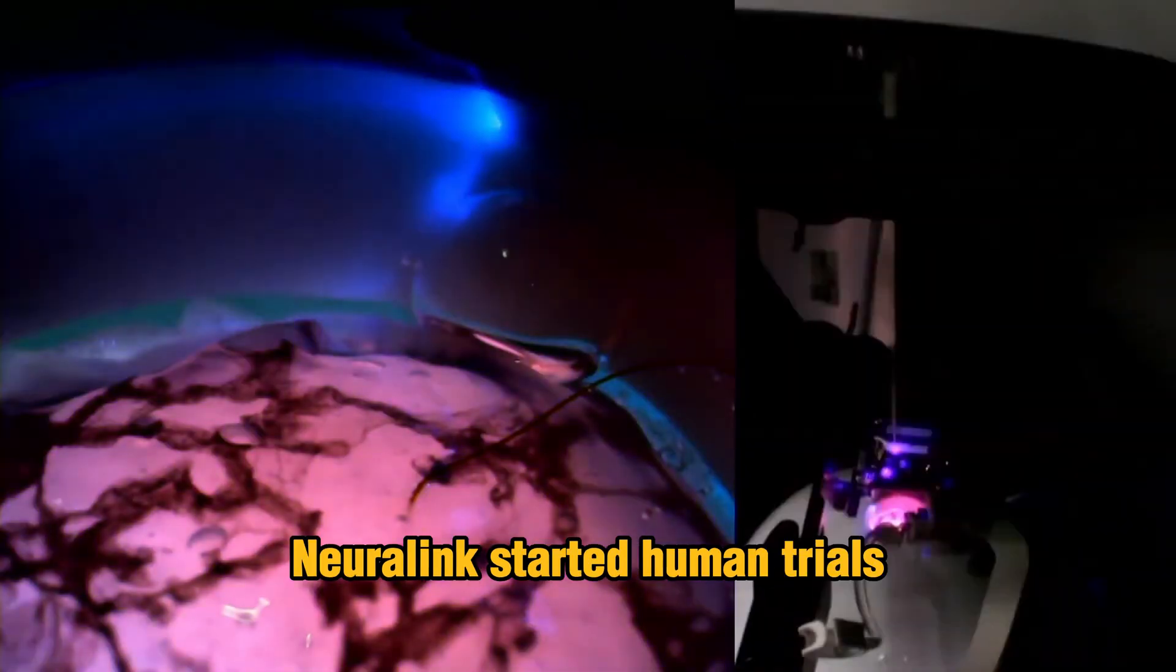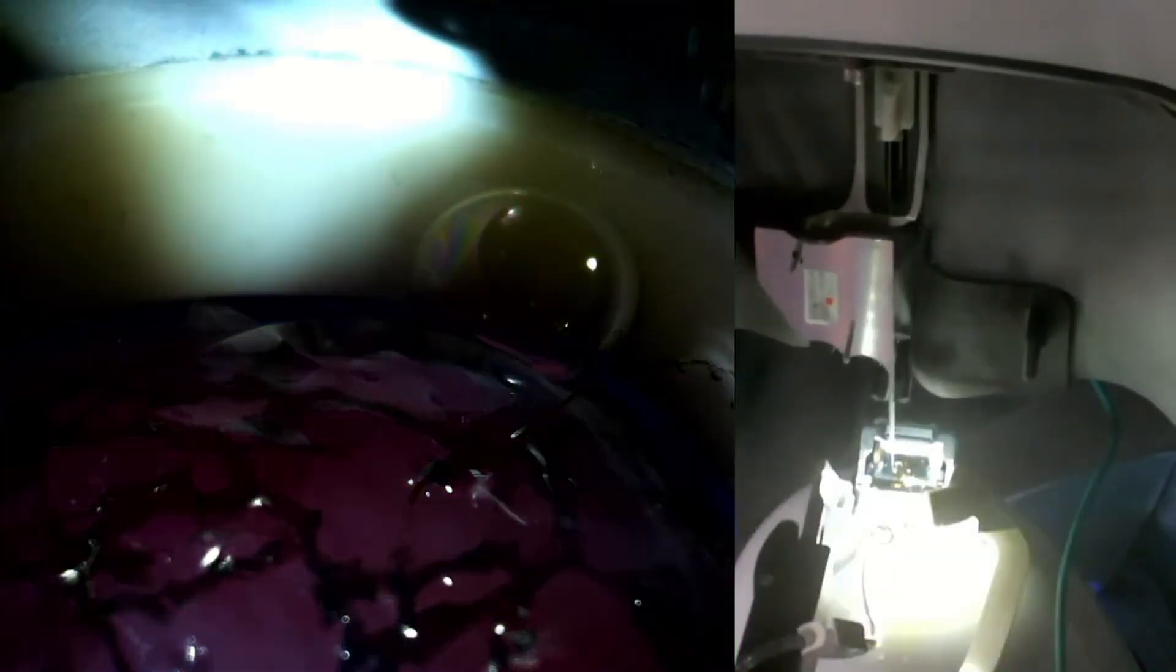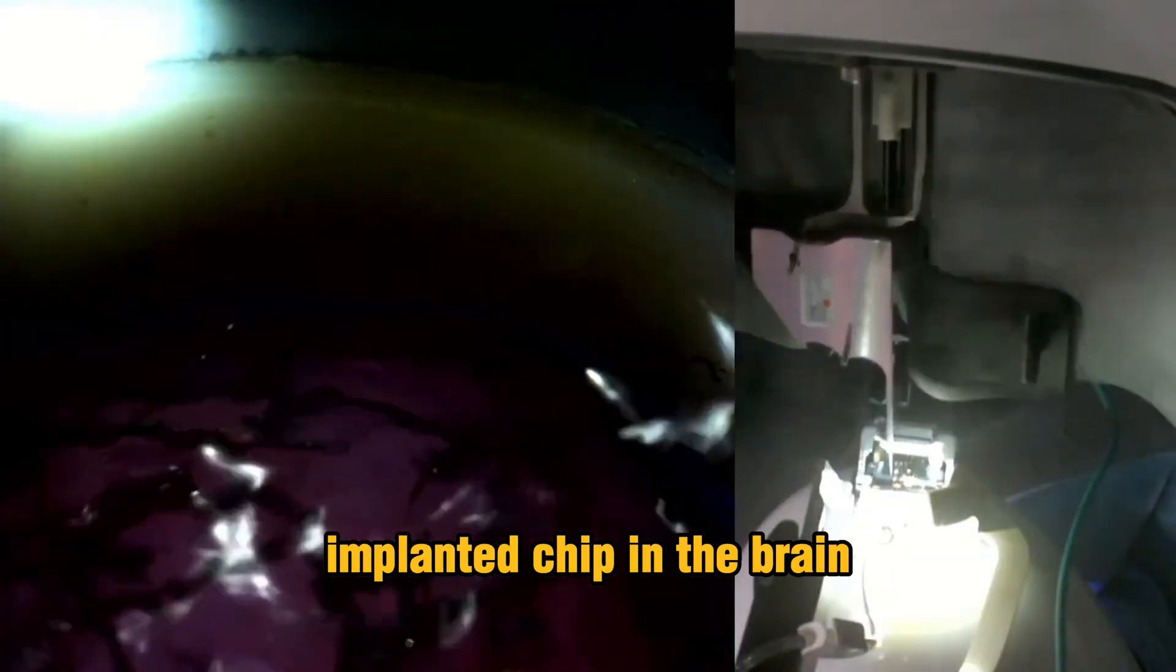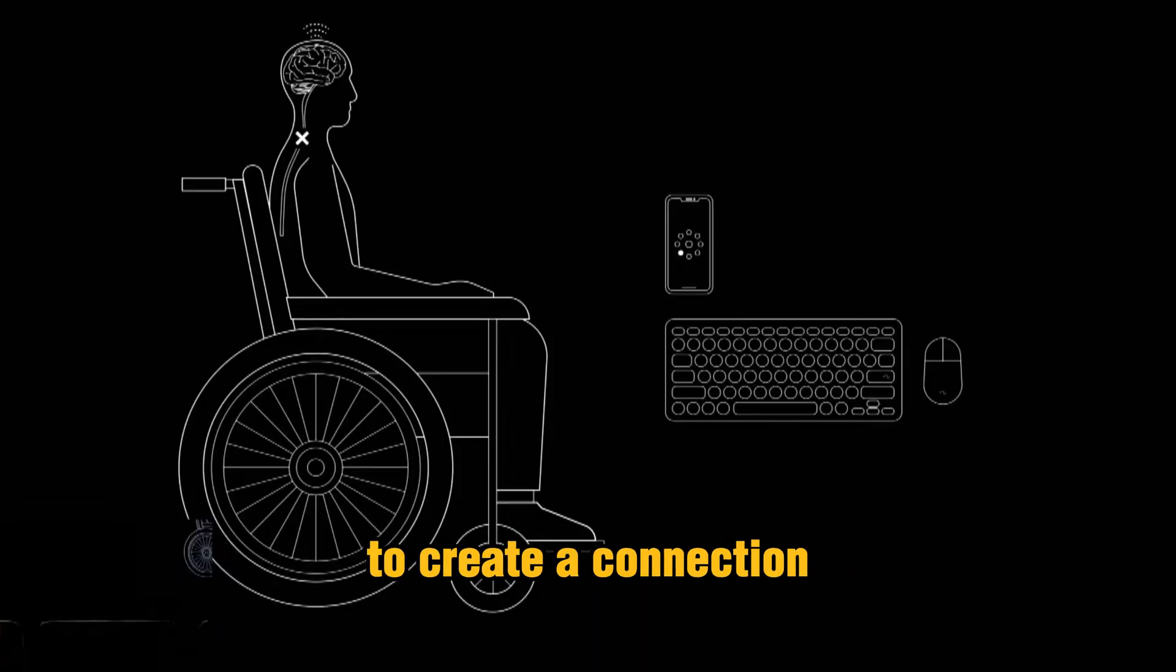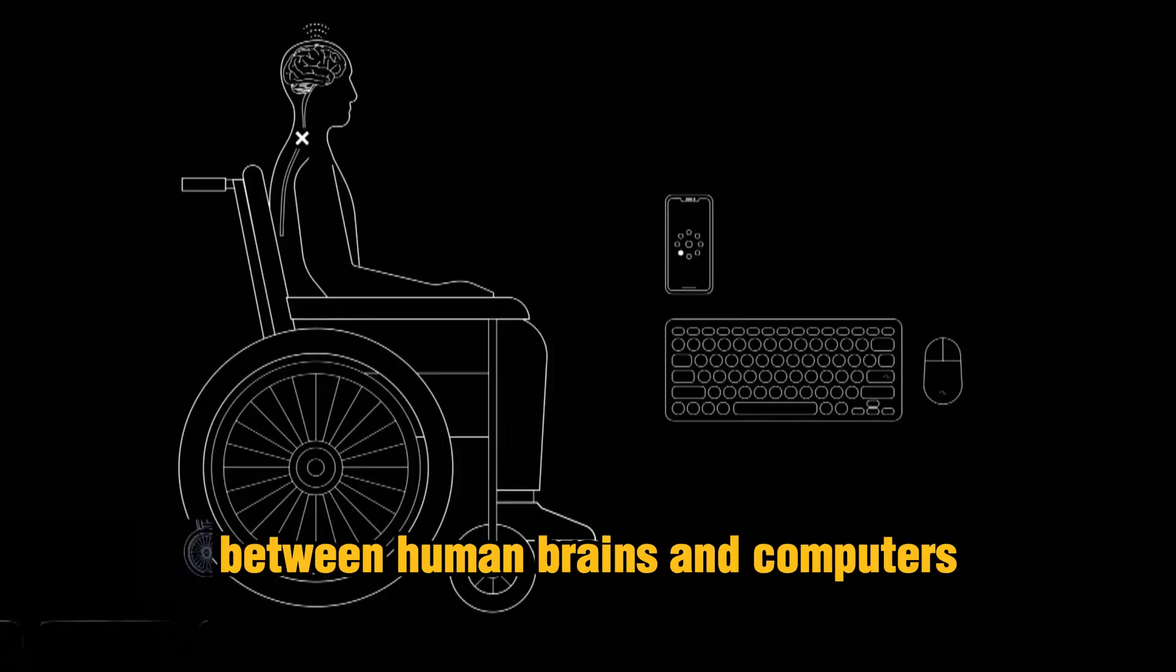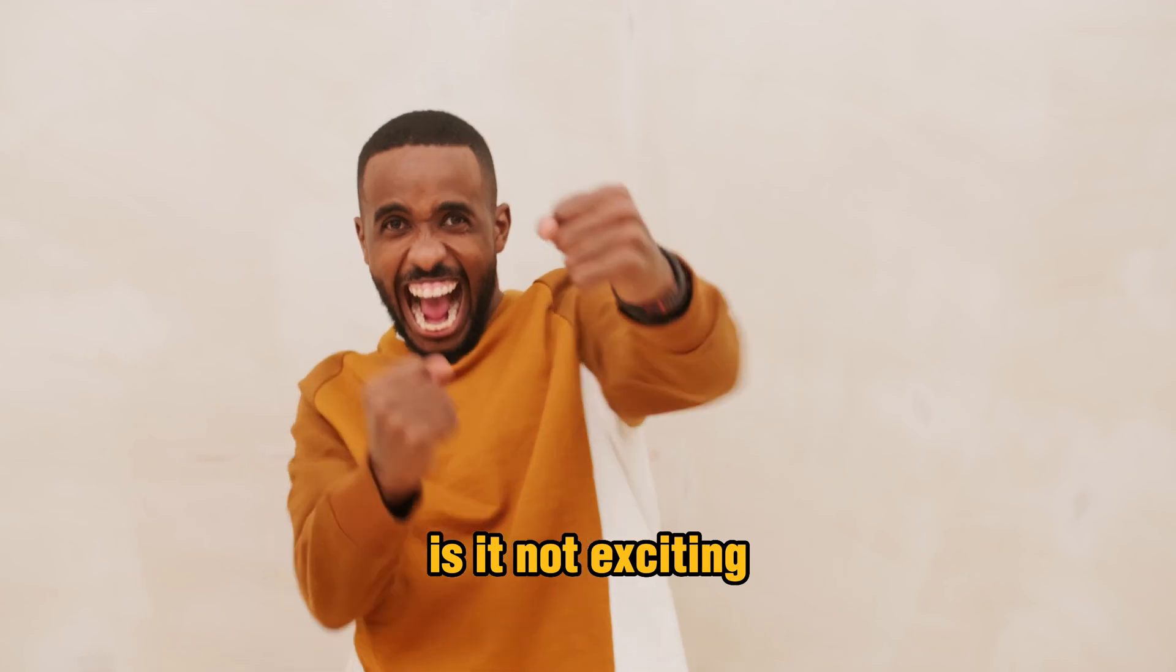Elon Musk's brain chip company, Neuralink, started human trials where the company implanted a chip in the brain to create a connection between human brains and computers. Is it not exciting?